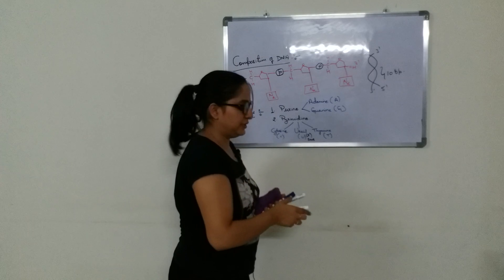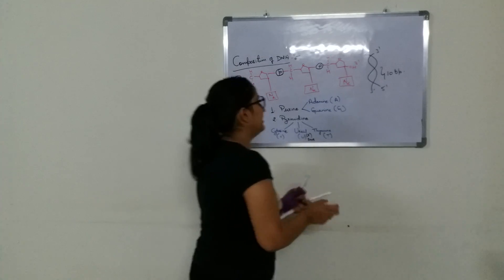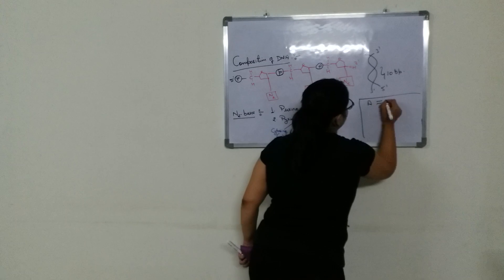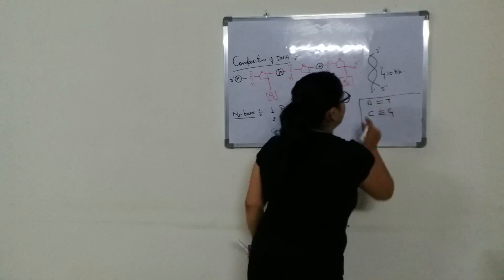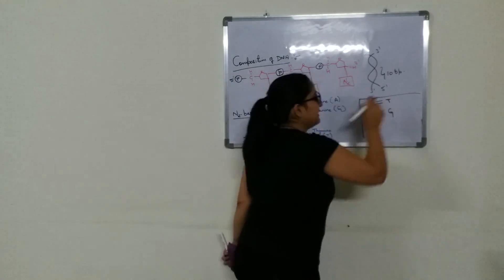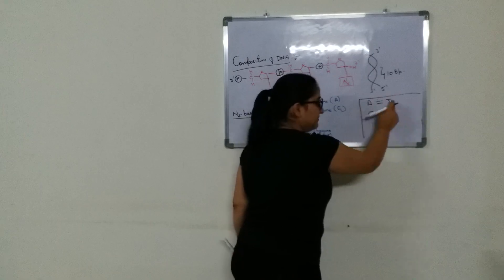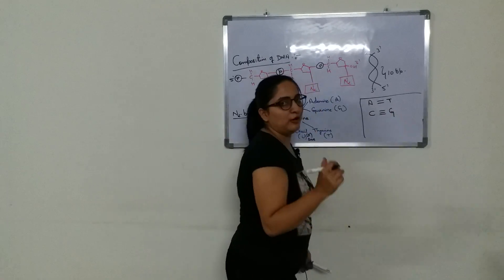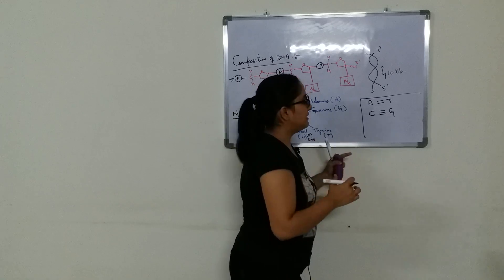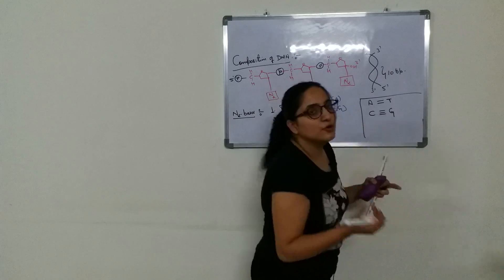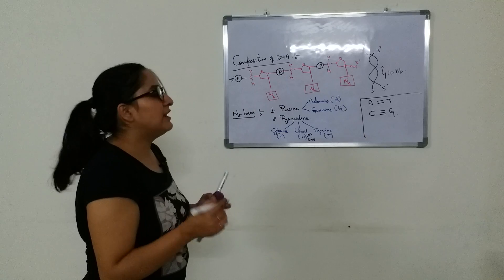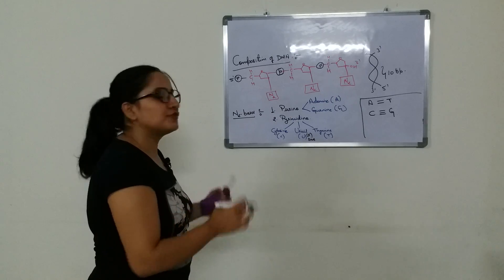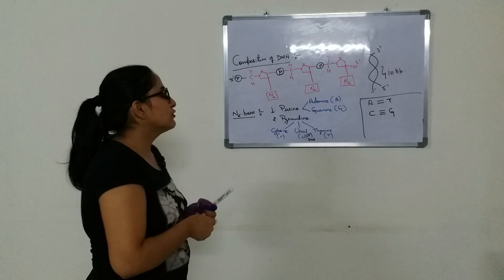These bases are complementary with each other. Adenine is complementary to thymine — adenine makes a double bond with thymine. Cytosine is complementary to guanine — cytosine makes a triple bond with guanine. This is very important in biology. There may be many questions asking you to calculate the percentage of adenine, guanine, cytosine, or thymine in a DNA structure.